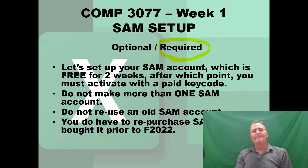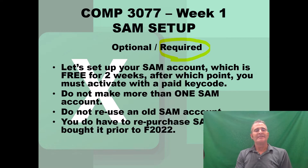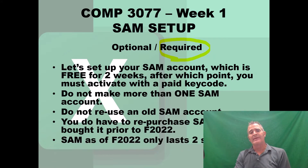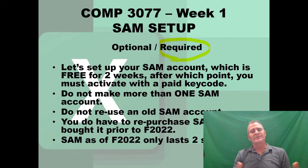If you bought SAM for a previous version of this course, we have now upgraded to the next version of Microsoft Office. It's a different product with a different ISBN, so you do have to buy SAM again — I'm very sorry about that, there's nothing we can do. The new version of SAM only lasts two semesters, but most of you will get through this course first time around, so you'll be good to go.